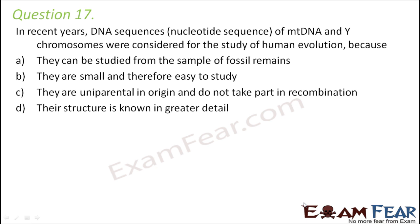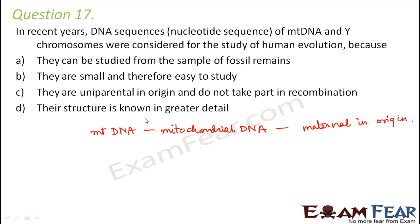Mitochondrial DNA is uniparental in origin and does not take part in recombination. Mitochondrial DNA is the DNA found in mitochondria, and in most species, including humans, it is inherited solely from the mother through the egg cell — because the egg cell is quite large and has more prominent cell organelles, including mitochondria.